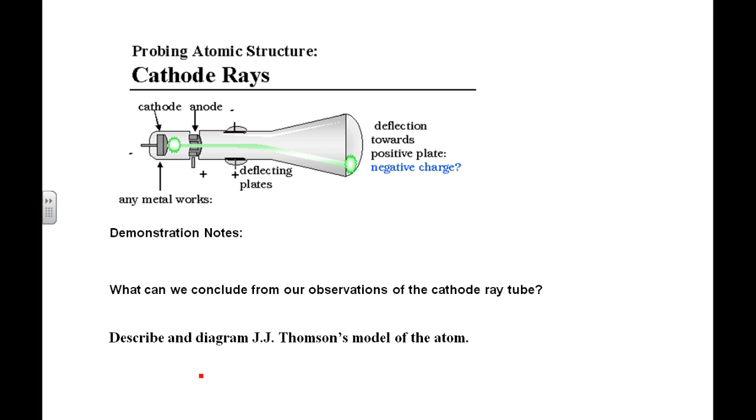Then we had a bunch of guys come along. You can read them in your notes. Coulomb, Avogadro, Dalton, they all came up with little parts that would be thrown together into Dalton's model, which once again was just a small circle that was indivisible. Then came Becquerel, and he saw that something came out of the uranium atom. And remember, if something comes out of the atom, then it must be divisible.